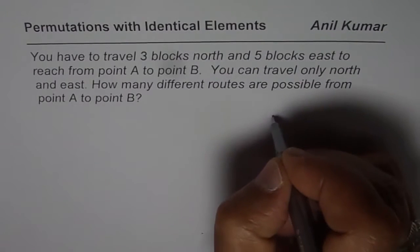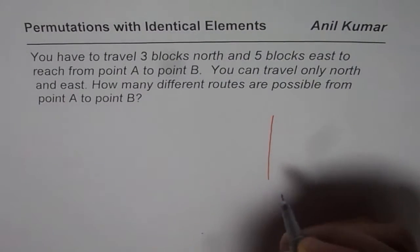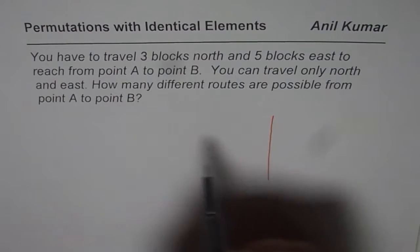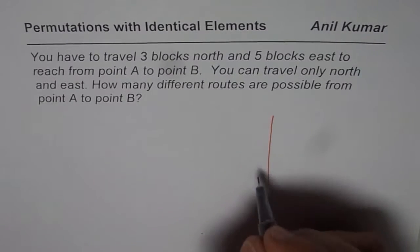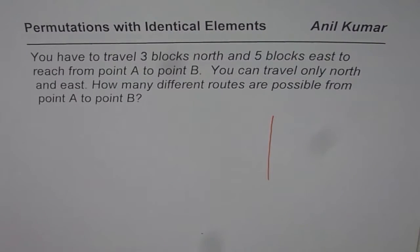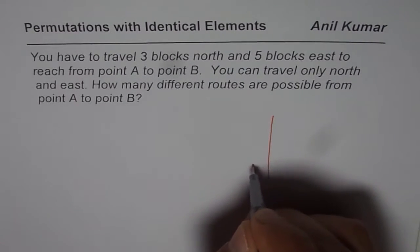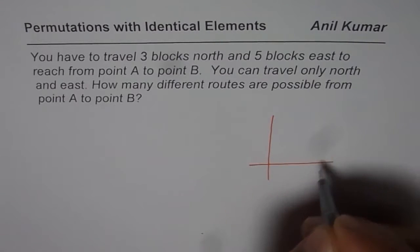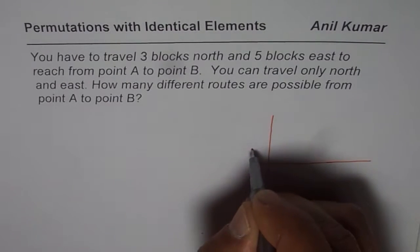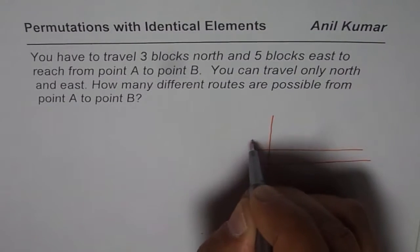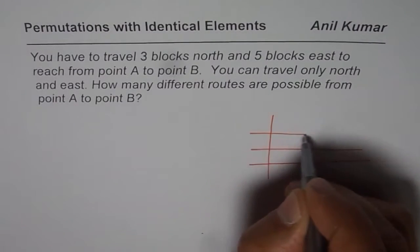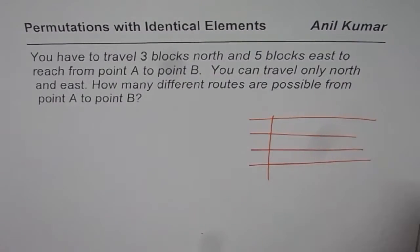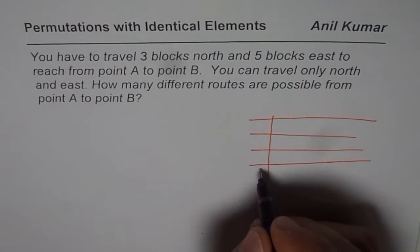Let's make a sketch. So we have point A, from where we have to go 3 blocks north. Let me just make a grid first. So this is our point A.